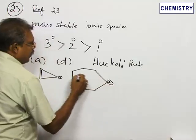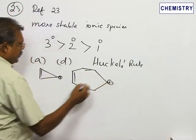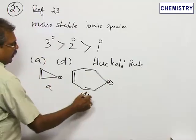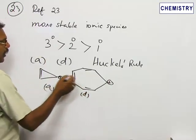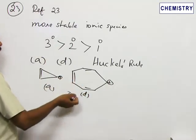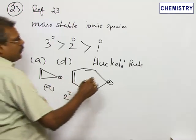This is structure a and this is structure d. Both are carbocations and they are secondary carbocations. They are more stable and the correct option is 2.